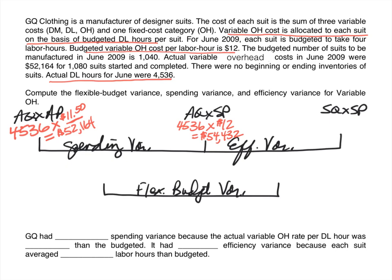Now we calculate the last peg. We already have the standard price of $12, and now we need the standard quantity — what should have happened at the actual level of production. The actual level of production was 1,080 suits. Since the cost driver is direct labor hours and each suit is budgeted to take four labor hours, we calculate standard quantity as 1,080 × 4 = 4,320 hours. So the third peg is 4,320 × $12 = $51,840.